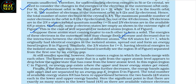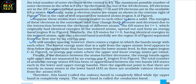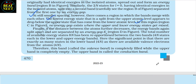Similarly, the 2N states for L=0 split into a second band separated from the first by an energy gap. At still smaller spacing, however, there comes a region in which the bands merge with each other and no energy gap exists. Finally, if the distance between atoms further decreases, the energy bands again split apart and are separated by an energy gap (region D in figure). The total number of available energy states (8N) is reapportioned between the two bands — 4N states each in the lower and upper energy bands. There are exactly as many states in the lower band (4N) as there are available valence electrons (4N). Therefore this band, called the valence band, is completely filled, while the upper band called the conduction band is completely empty.